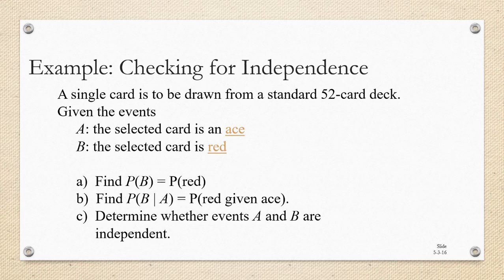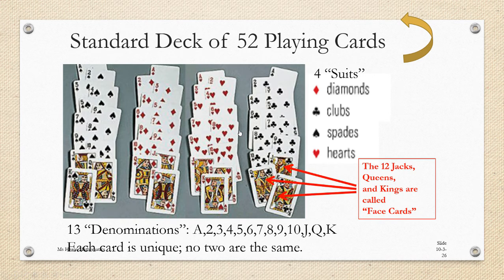The two events we're comparing for independence are: event A, we drew an ace from a 52-card deck, or event B, we selected a red card from a 52-card deck. Let's take a look at a 52-card deck. There are four aces — the cards with the A on them — one of each suit: diamonds, clubs, spades, and hearts.